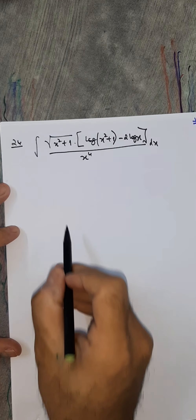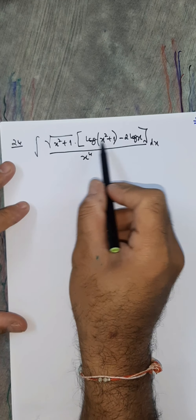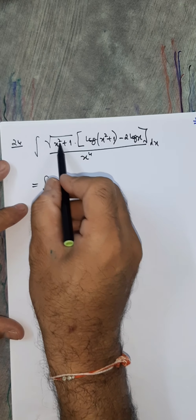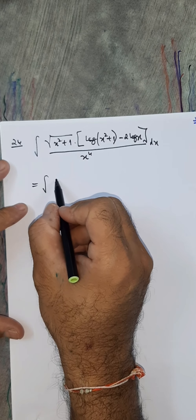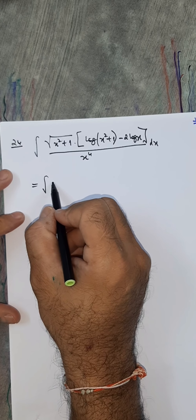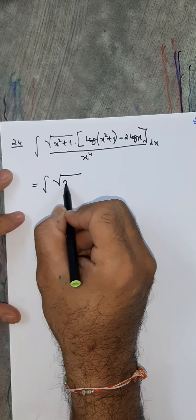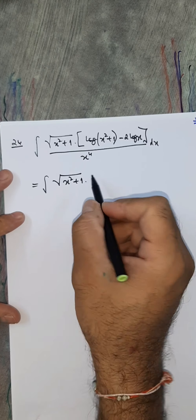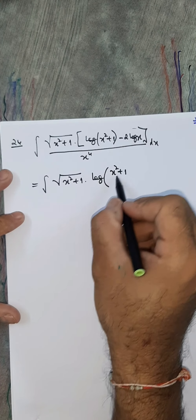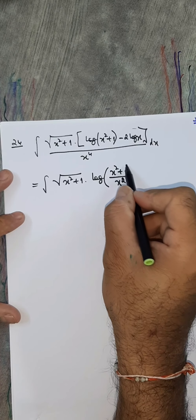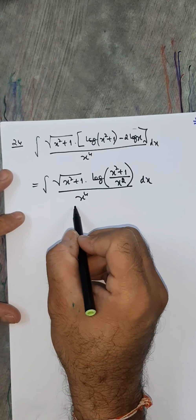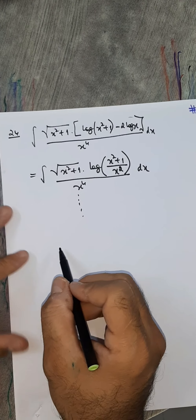Question number 24: for the integral involving log[(x²+1)/x²] — using the property of the log function, bring x raised to 4 inside the square root. This gives root[(x²+1)²/x⁴] dx. This simplifies the expression — try working it through; we proceed to question 25.